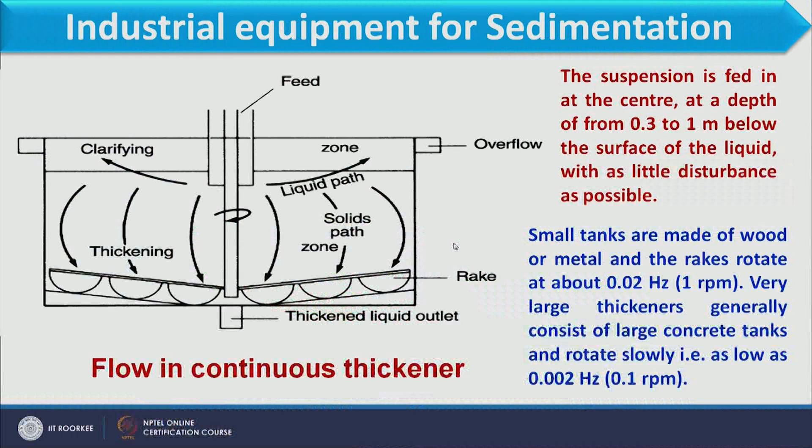Disturbance can be avoided significantly by entering the feed some distance from the top, and for this such arrangement is made. Small tanks are made of wood or metal and the racks rotate at about 0.02 Hz, that is 1 rpm. Very large thickeners generally consist of large concrete tanks and rotate as slowly as 0.002 Hz, that is 0.1 rpm. The assembly revolves very slowly so that the settling process is not disturbed; otherwise the sludge collected at the bottom would mix with the upper clarifying liquid. The racks collect all the sludge at the centre towards the exit nozzle.